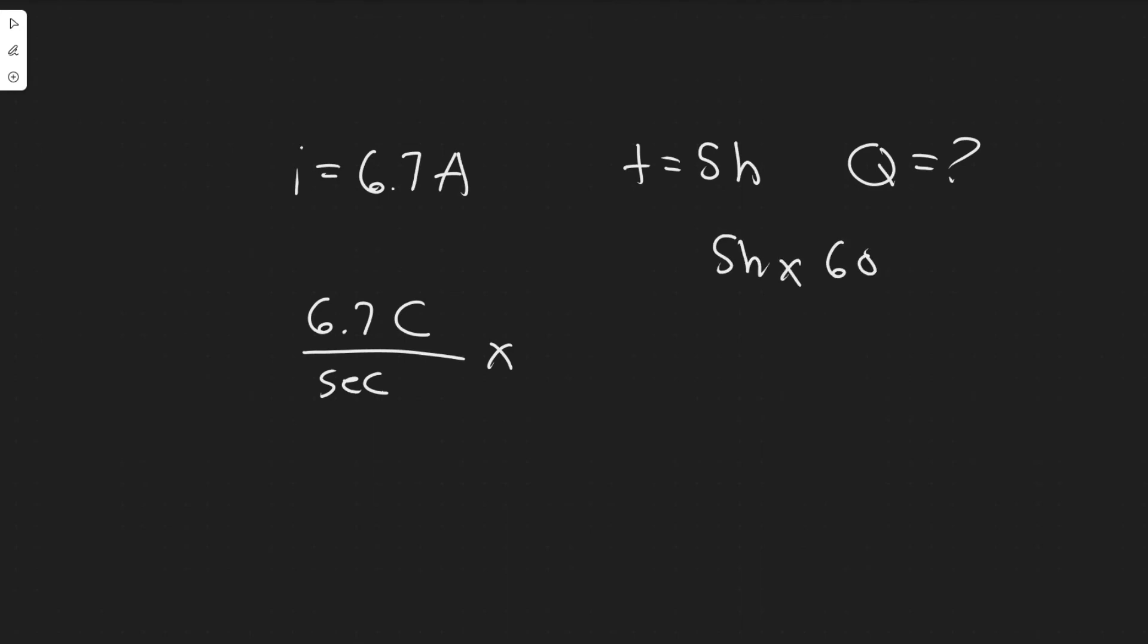And then there is 60 seconds for every one minute, so you just multiply it by 60 times 60. So five times 60 times 60 is 18,000. So when we do it here, 18,000 seconds, you're going to cancel it and you'll just get Coulombs.